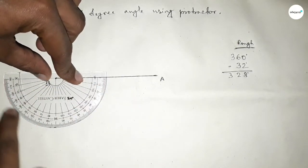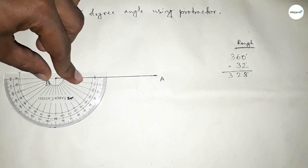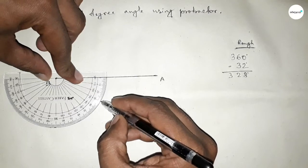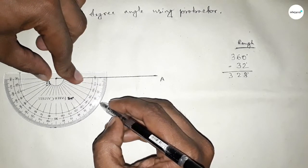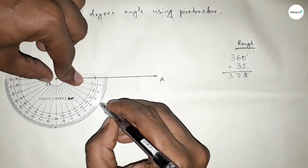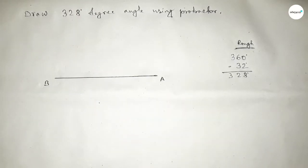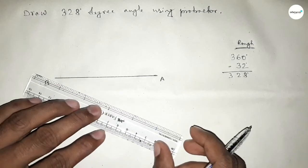From this we get a total 360 degree angle. Now counting 32 degree angle - this is 10, 20, 30, 31, 32 degree angle. So this is 32 degree angle. If we subtract 32 degrees from 360 degrees, then we can get 328 degree angle.